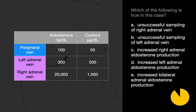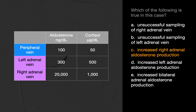The correct answer is C: increased rate of adrenal aldosterone production. The laterality of aldosterone hyperproduction is assessed by comparing the aldosterone-to-cortisol ratio between the adrenal and peripheral venous samples. Aldosterone-hyperproducing adrenal glands will demonstrate ratios higher than that of the peripheral vein, as with the right adrenal venous sample in this case, which is 20 times compared to 2x in the peripheral vein. Concomitant suppression of contralateral adrenal aldosterone production is an associated finding, which is why the aldosterone-to-cortisol ratio is less than 1 in the left adrenal vein sample here.